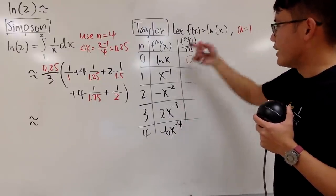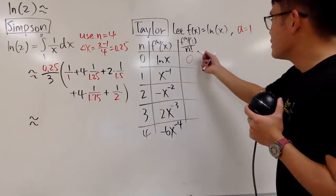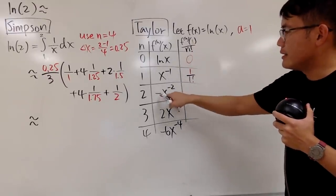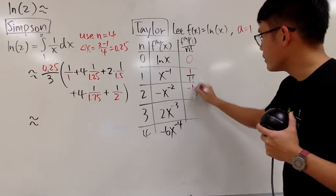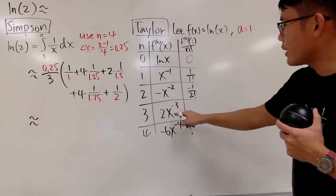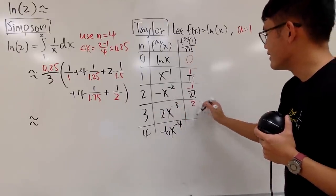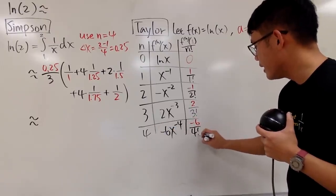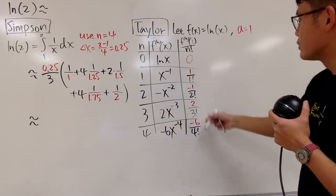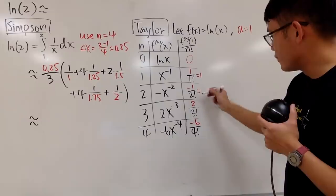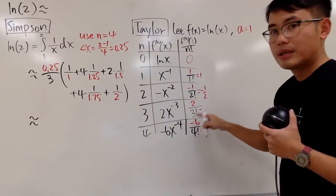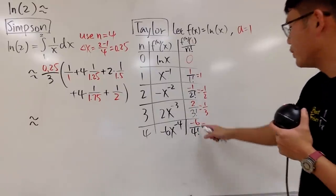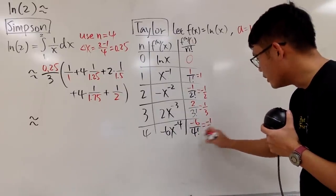Now plug x=1 into each derivative and divide by the corresponding factorial. We get: 1/1!, which is 1; then -1/2!, which is -1/2; then 2/3! — since 3! = 6 and the 2 cancels, this is 1/3; and finally -6/4! — since 4! = 24 and 6 cancels with 2×3, we get -1/4.